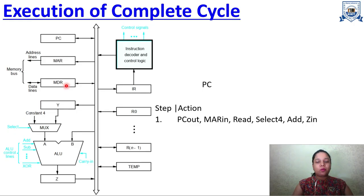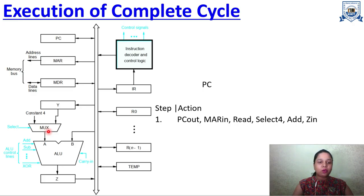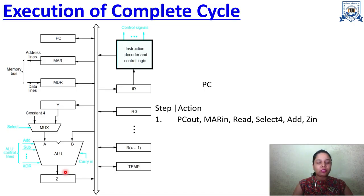Now, while memory is being read, PC must also be updated to point to the next instruction. The control sequence says: Select 4 — the value 4 is selected at the MUX. The current PC address (1000) is placed on the bus into the ALU's B input, and 4 enters the other input. The ALU performs an add operation: 1000 + 4 = 1004. This result, 1004, is stored in the temporary register Z. So Z in is written in the control sequence.